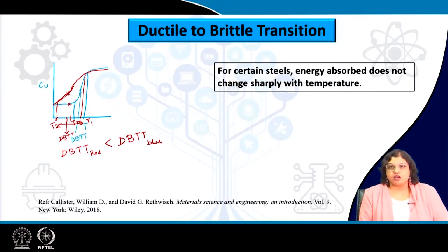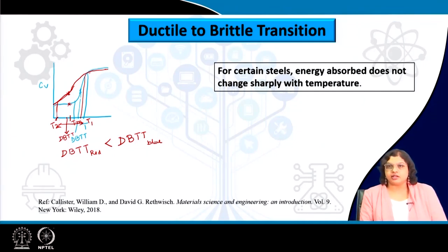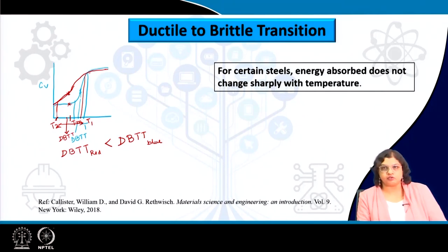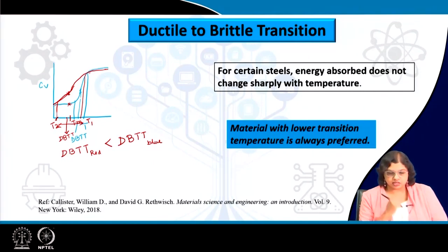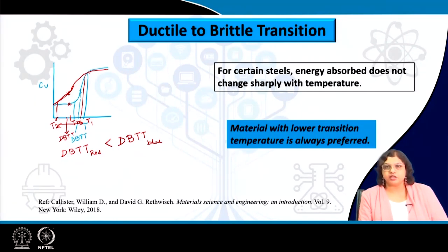This tells us that when designing or selecting a material for a certain application, we must ensure the DBTT is as low as possible. It is always preferred to have a lower transition temperature, so that even if the service temperature decreases, it does not lead to a rapid or drastic change in failure behavior.